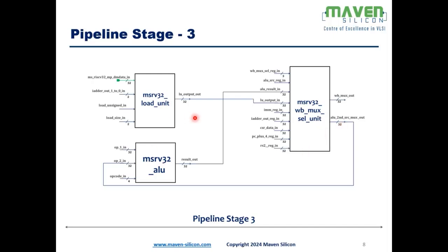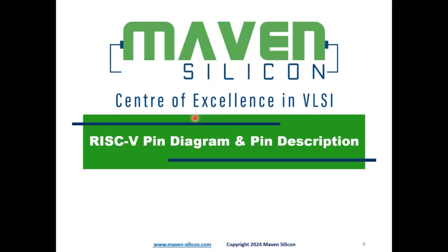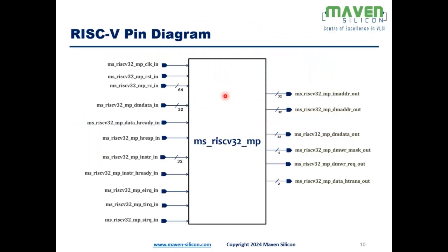Now let's look at the pin diagram and pin description for the RISC-V top block. The RISC-V top module has input and output ports. We have the RISC-V clock input (system clock), an active-high asynchronous reset, and MTIME_IN — a 64-bit real-time counter input through which the processor communicates with a real-time counter. We also have DM_DATA_IN, a 32-bit bus that receives data from the external data memory, since this is RV32 supporting a 32-bit data width.